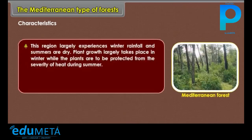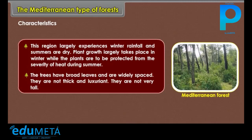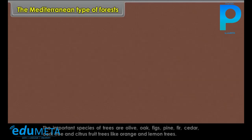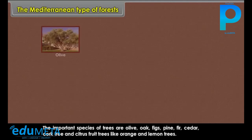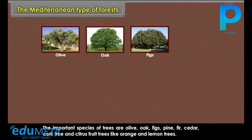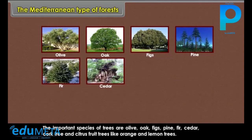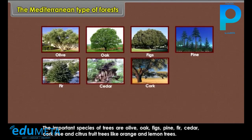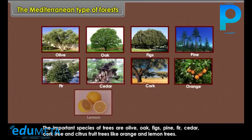Characteristics: This region largely experiences winter rainfall and summers are dry. Plant growth largely takes place in winter while plants are to be protected from the severity of heat during summer. The trees have broad leaves and are widely spaced — they are not thick and luxuriant, nor very tall. The important species of trees are olive, oak, figs, pine, fir, cedar, cork tree and citrus fruit trees like orange and lemon trees.